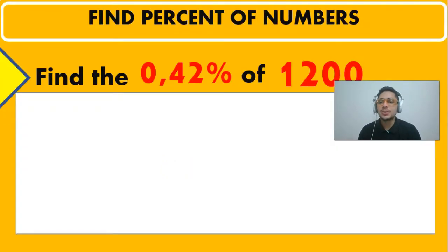So today's problem is how to find the 0.42% of a big number like 1,200. We can use, as we have seen in previous videos, two methods.